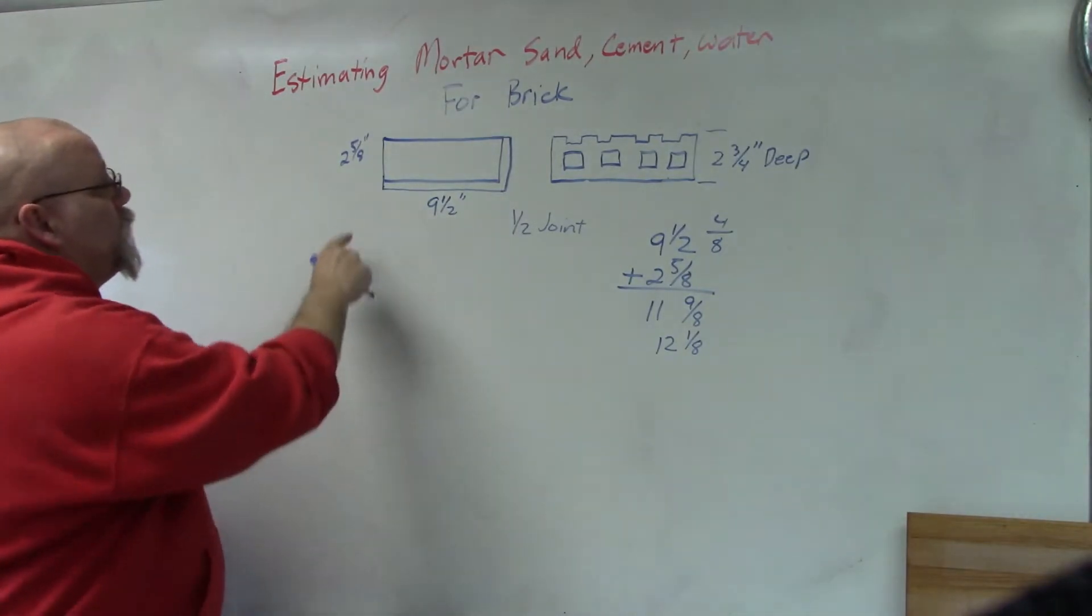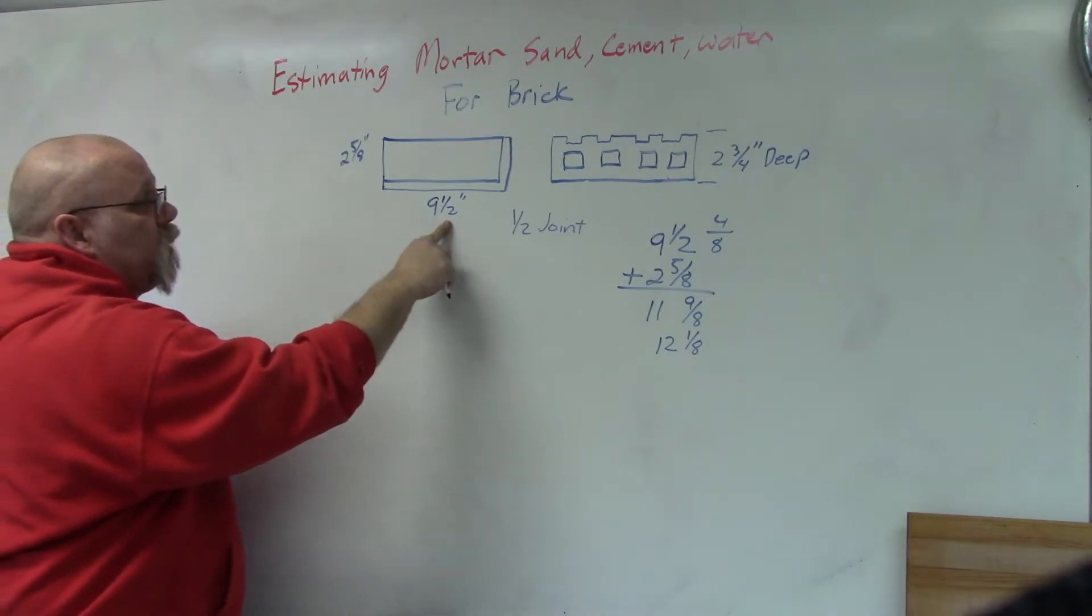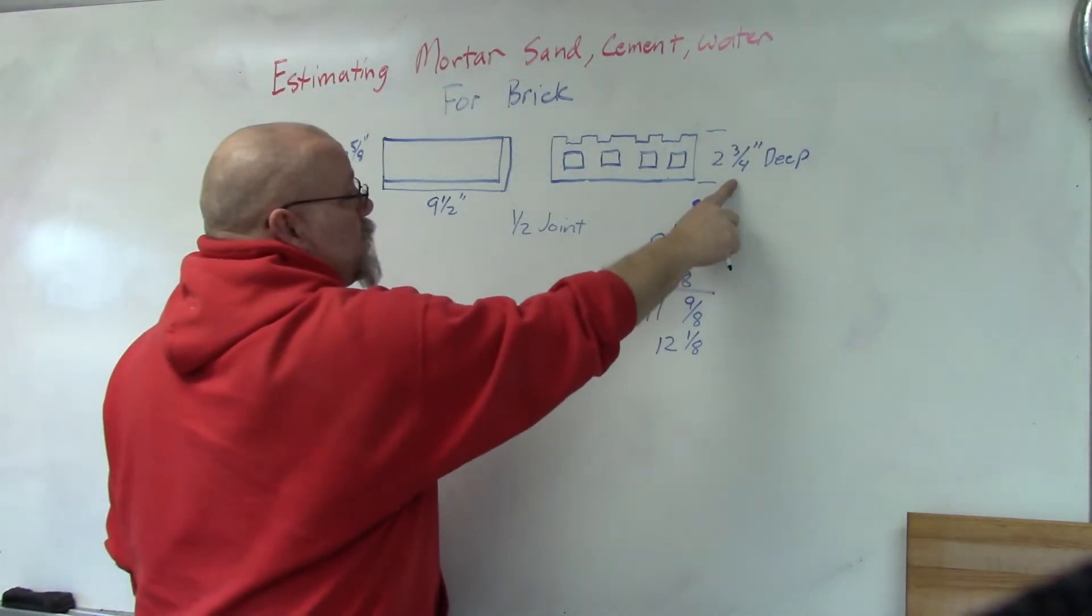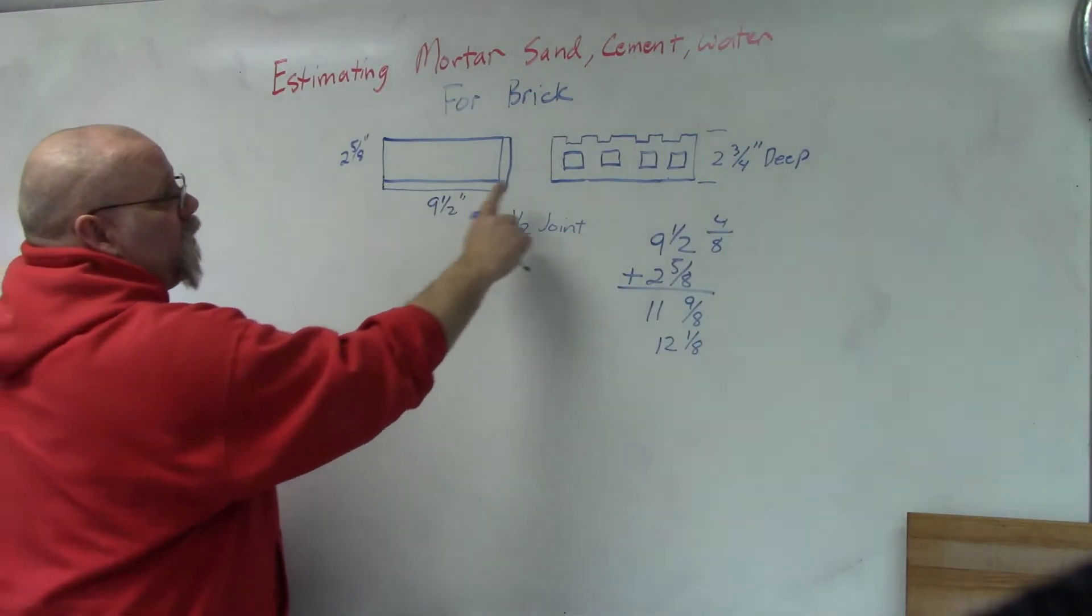The height of the brick is 2 and 5/8 inches, the length of the brick is 9 and 1/2 inches, and it's 2 and 3/4 inches deep.